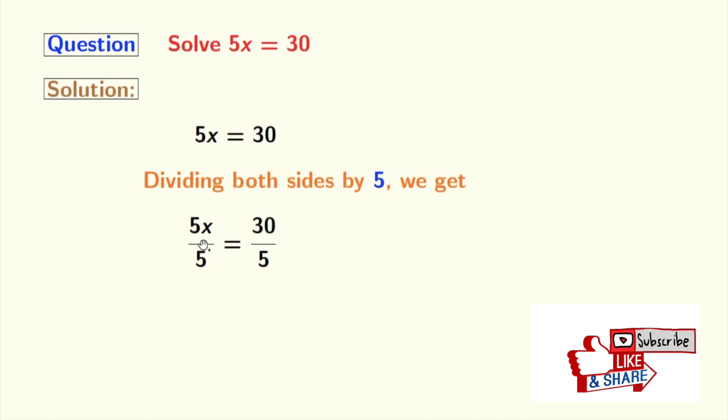Now, on the left hand side, we have 5 in both the numerator and denominator. So 5 gets cancelled and we are left with x.